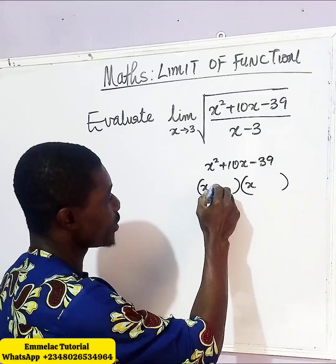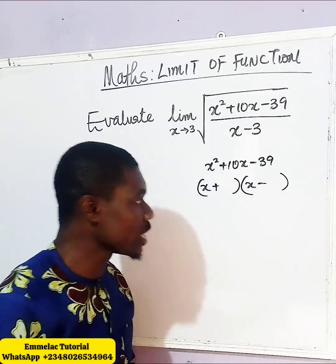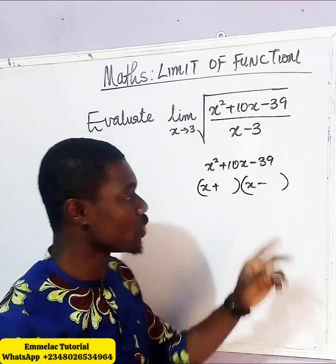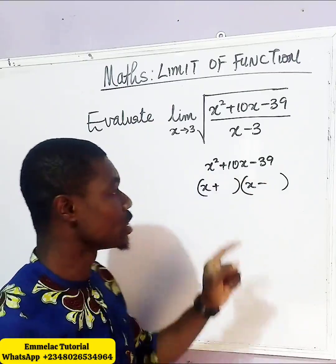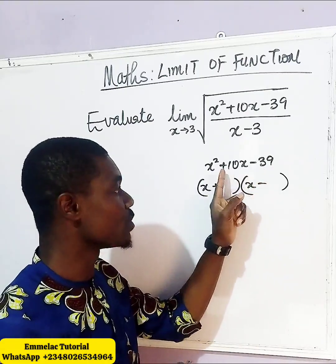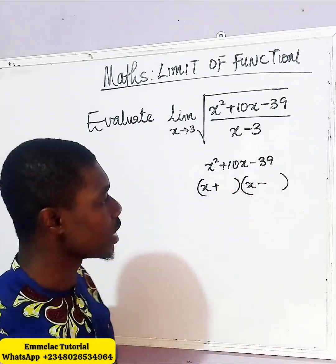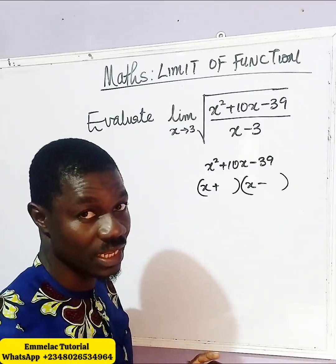Which means we can just add plus and we can just add minus. So, what are those two factors? Which when you multiply will give you minus 39 and you add them to give you plus 10. It'll be 13 and 3.